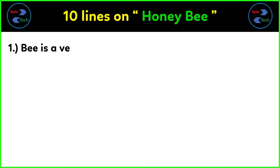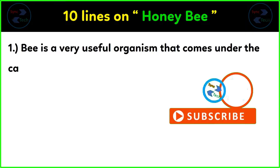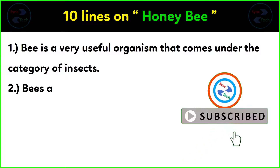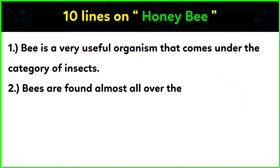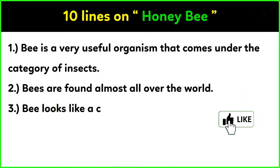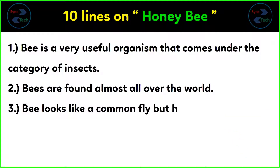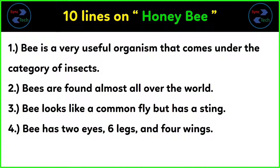Bee is a very useful organism that comes under the category of insects. These are found almost all over the world. Bee looks like a common fly but has a sting. Bee has two eyes, six legs, and four wings.